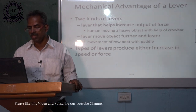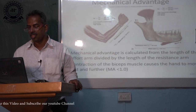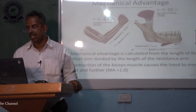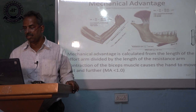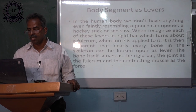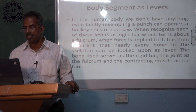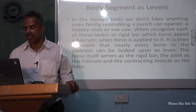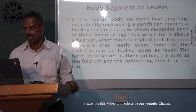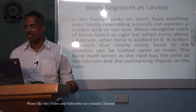Types of levers produce either an increase in speed or force. Human body examples are given here — the biceps bending the forearm, and the mandible bone is shown. While chewing, muscles are contracting and working, which allows us to chew. Body segments as levers: in the human body, nearly every bone in the skeleton can be looked upon as a lever. The bone itself serves as the rigid bar, the joint as the fulcrum, and the contracting muscle as the force.